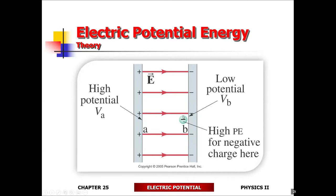What kind of potential energy does this charge have? Is it higher or is it low? You kind of know the answer. So this negative charge placed right next to the negative charge plate is going to have high potential energy. Justify as to why it's going to have high potential energy. Because it's also a negative charge and that plate is negatively charged, so they're going to want to repel each other.